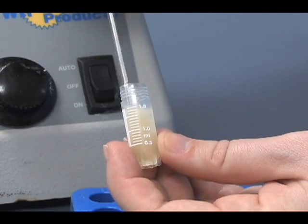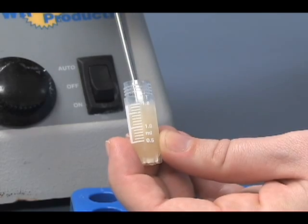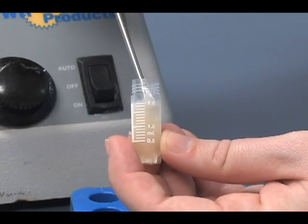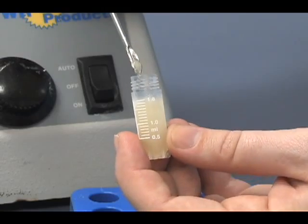Alternatively, if the bead method is not preferred, you may use a spatula to scrape a small portion of the frozen broth from the top of the vial, which can then be streaked across the surface of the media.